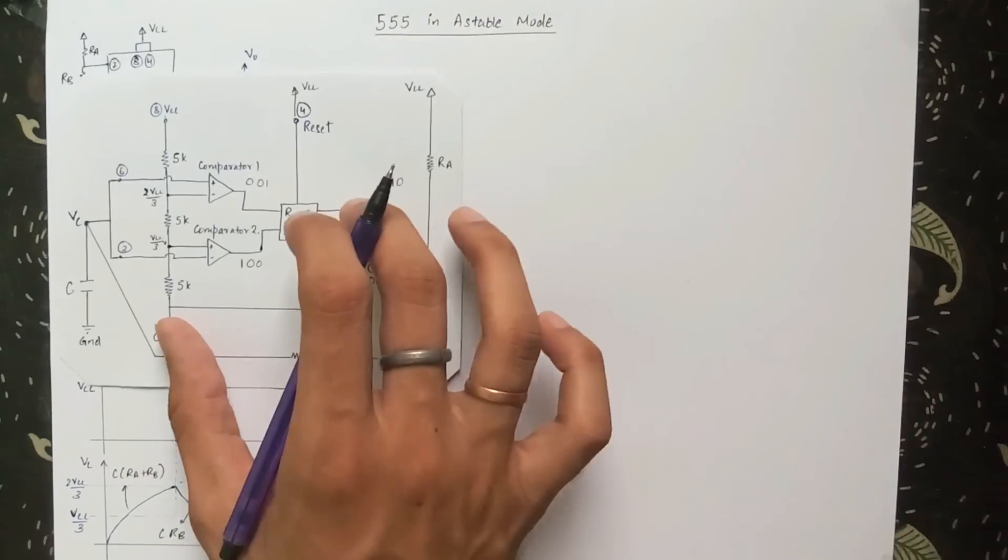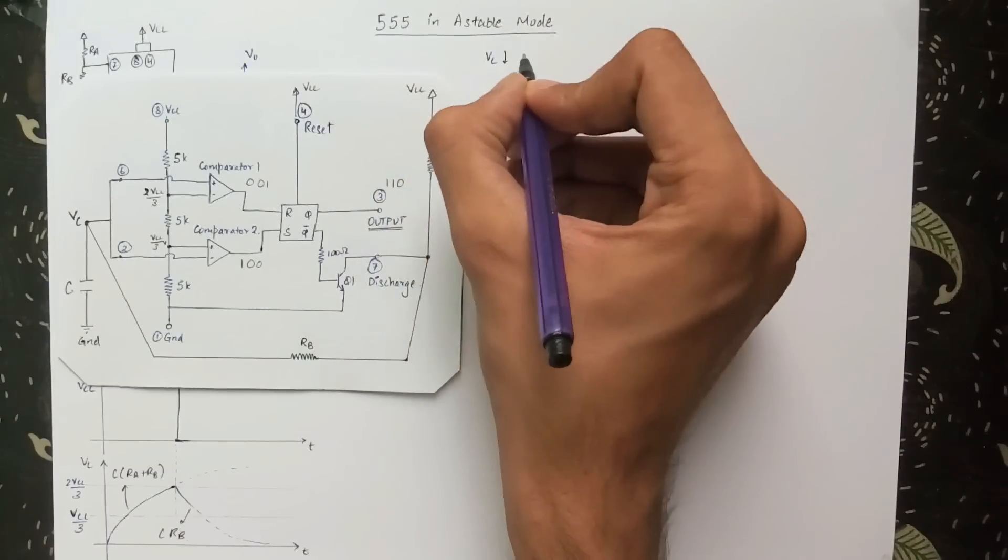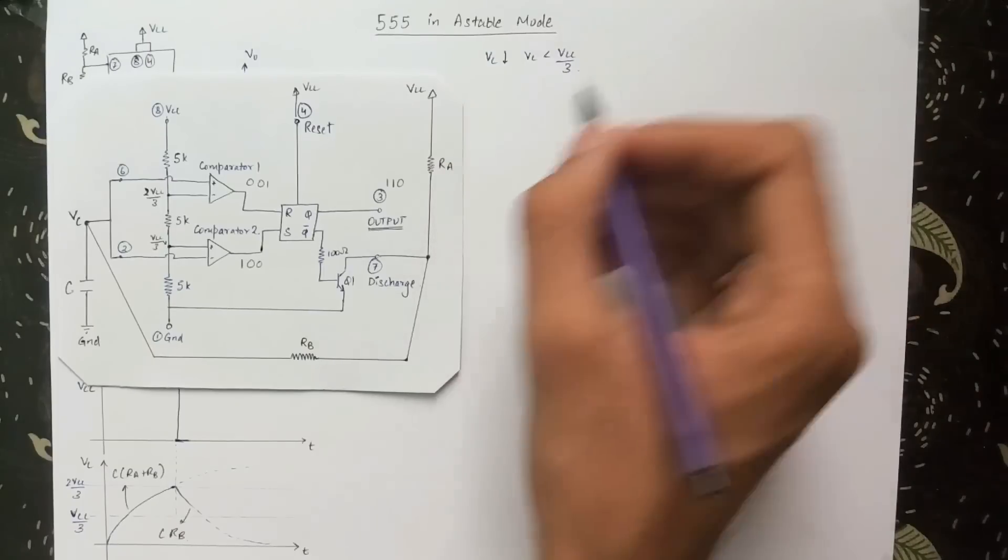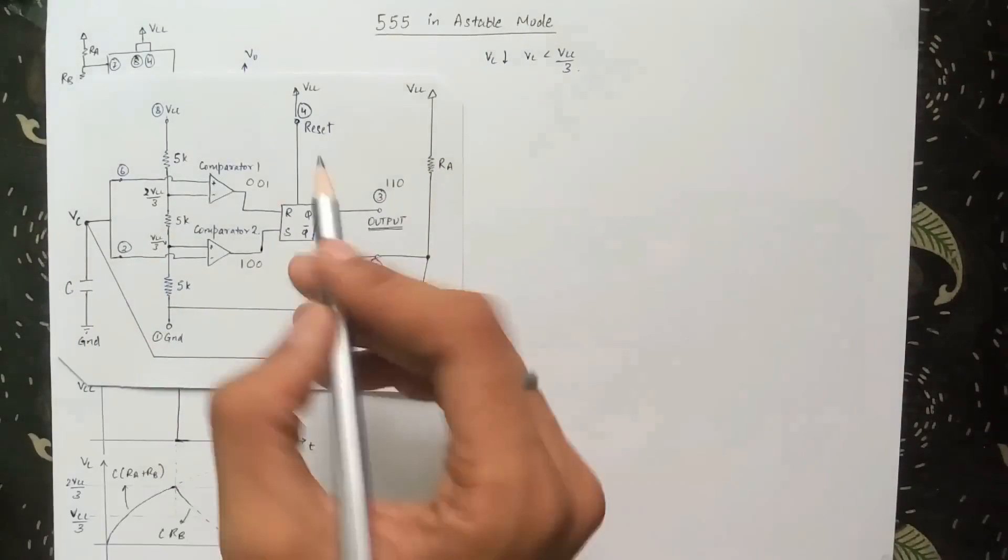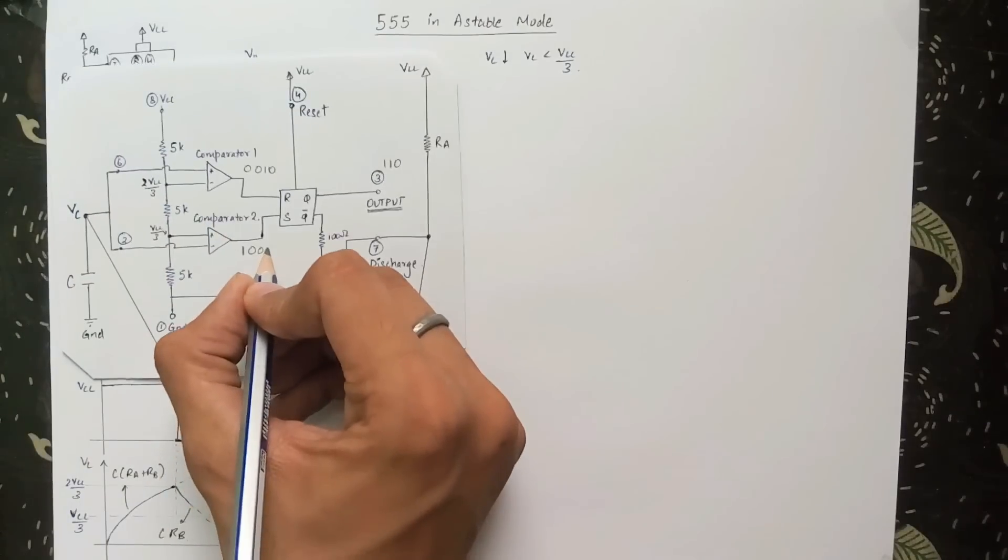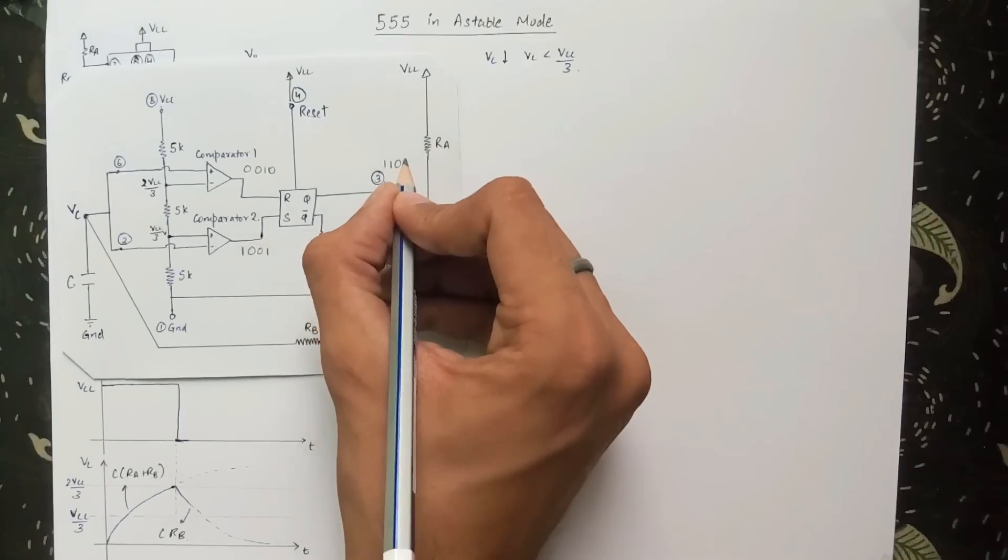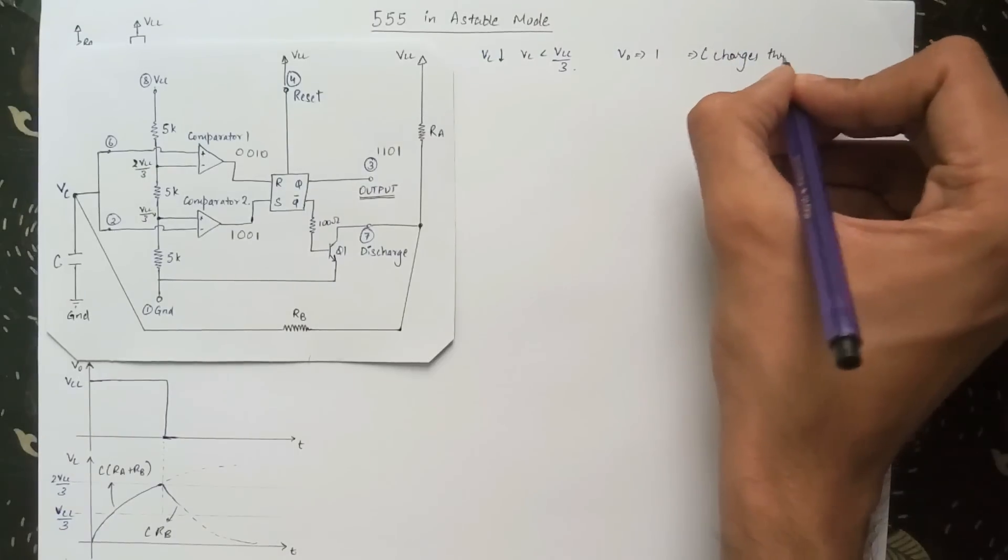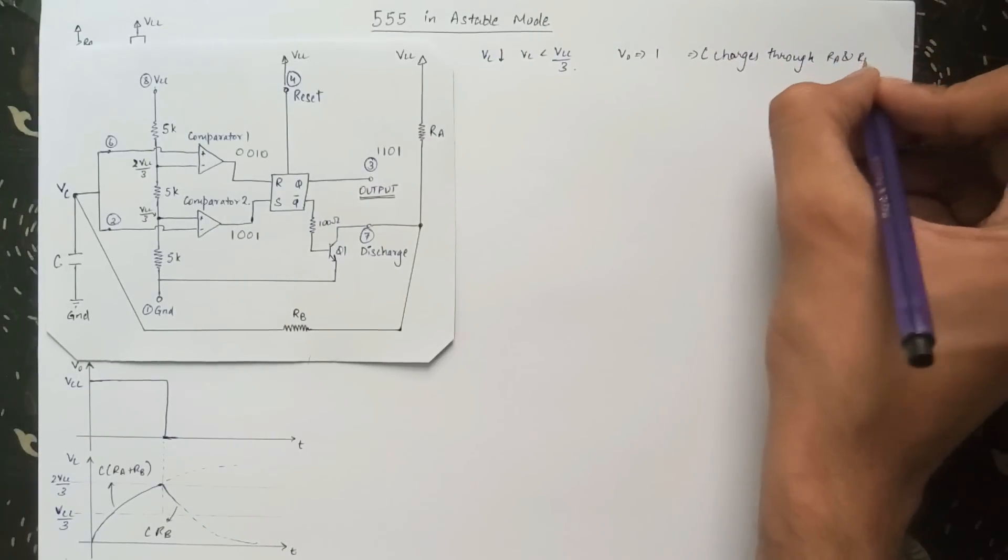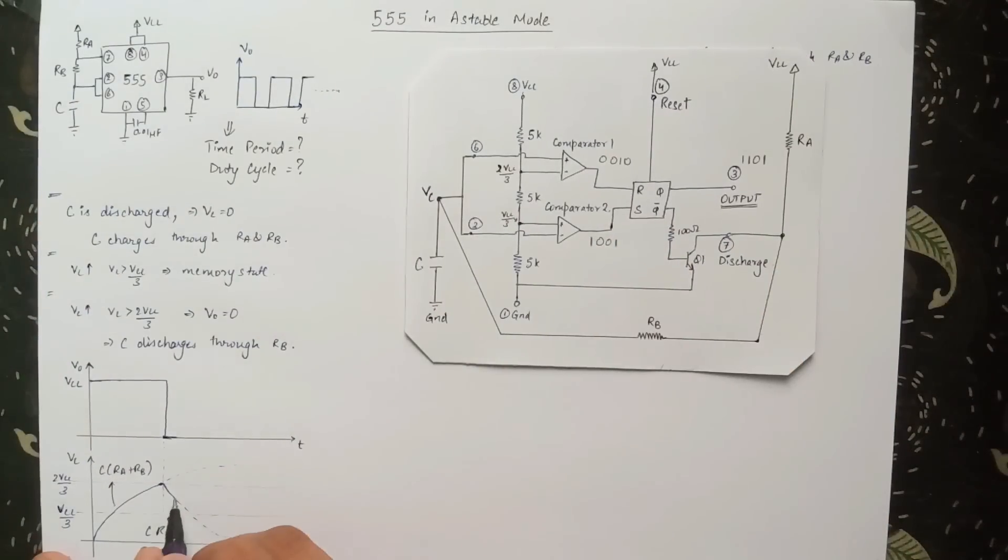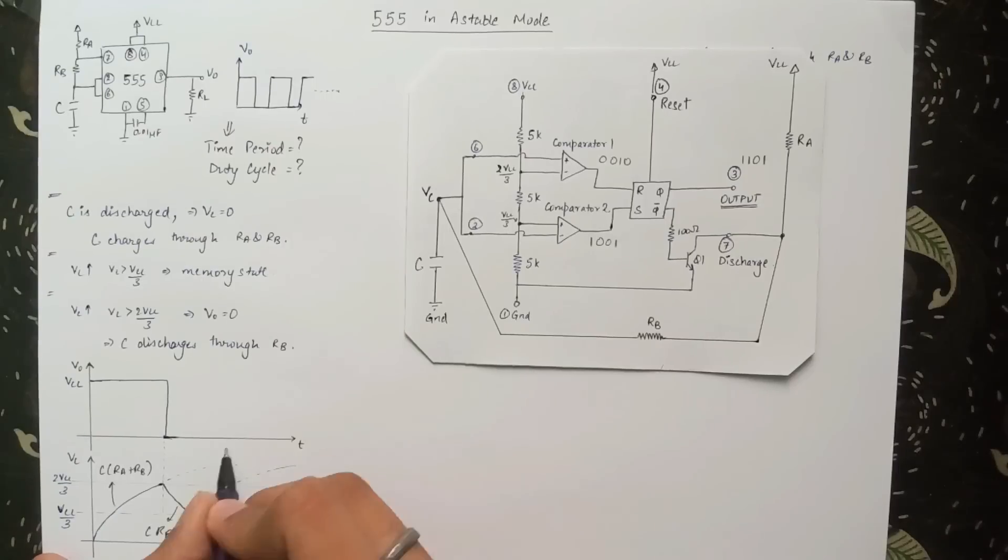Moving on with our analysis, as the capacitor starts discharging and voltage across it reduces below Vcc by 3, the output of comparator 1 goes to logic zero and output of comparator 2 goes to logic one. Therefore, the output of the 555 timer IC switches to high and the capacitor starts charging again through RA and RB. The capacitor discharges and charges infinitely until the power supply is maintained, thus forming an oscillator.